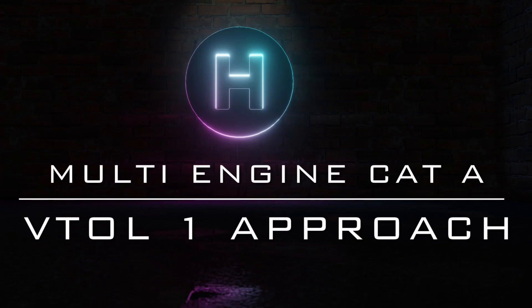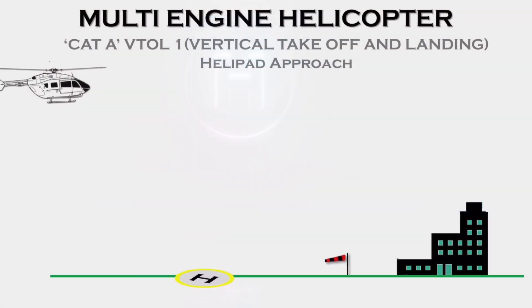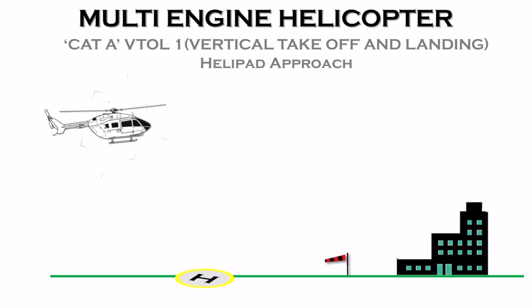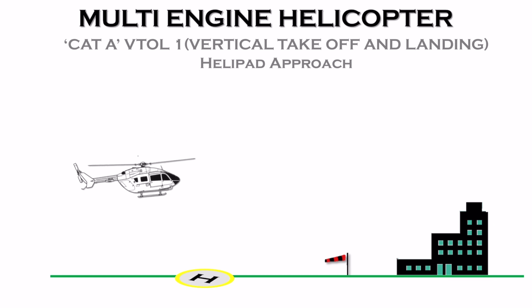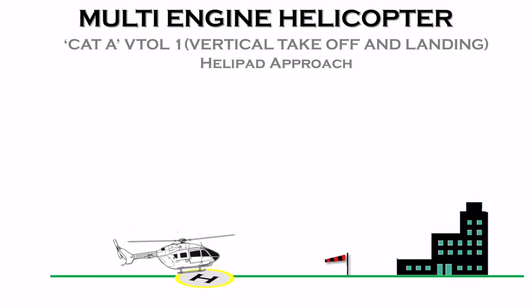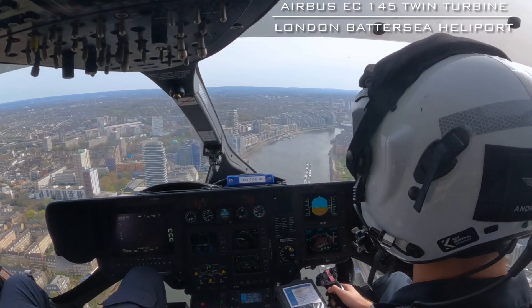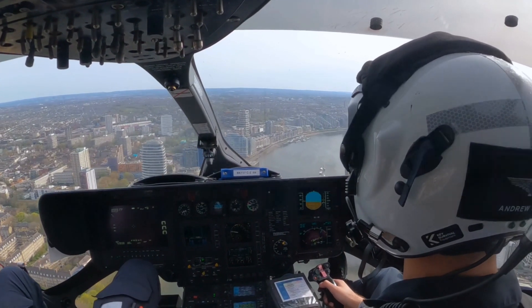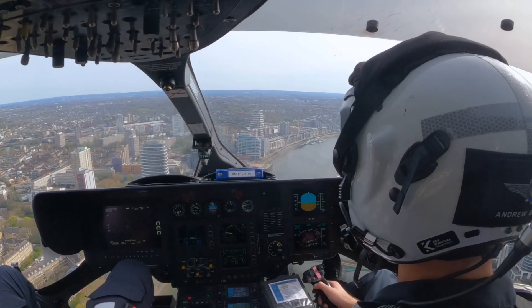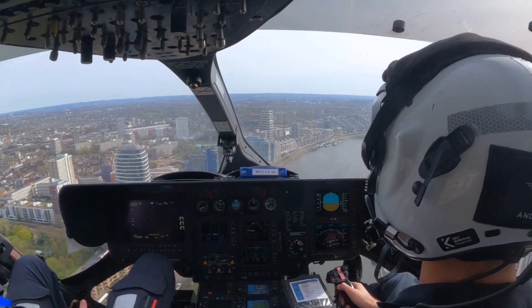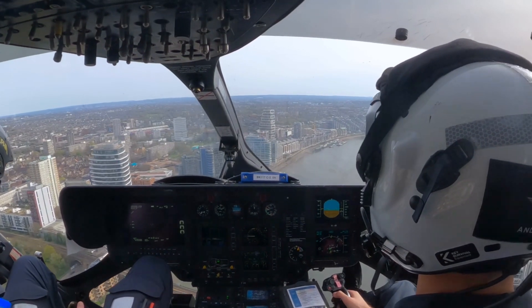Next up is the Vertical Take-off and Landing — VTOL-1 — profile. There are slight differences between these profiles depending on the height of any obstructions ahead and behind the landing area. For the EC-145 helicopter, for example, the LDP is defined as 30 knots and 100 feet above the landing area. The landing area must be 20 metres wide and have a 32 metre wide clear area around it. This is an example of an Airbus EC-145 helicopter landing at London Battersea Heliport.